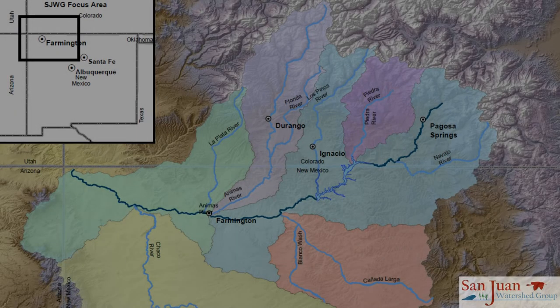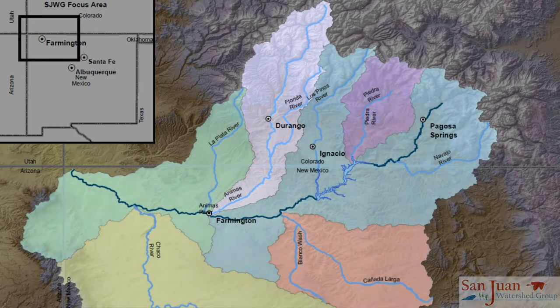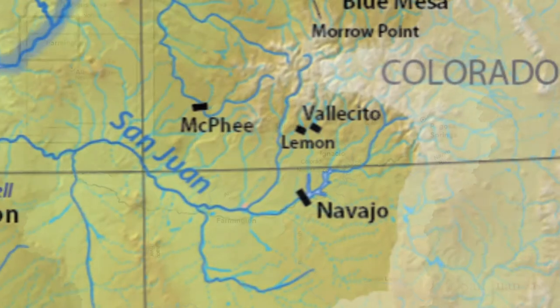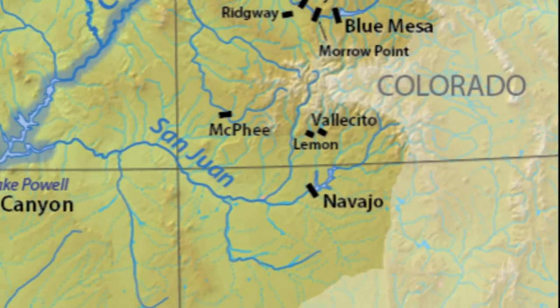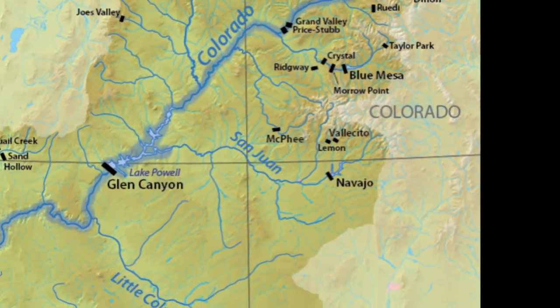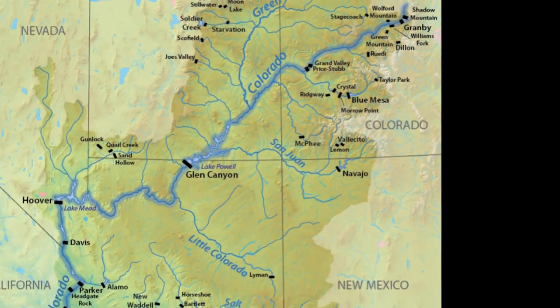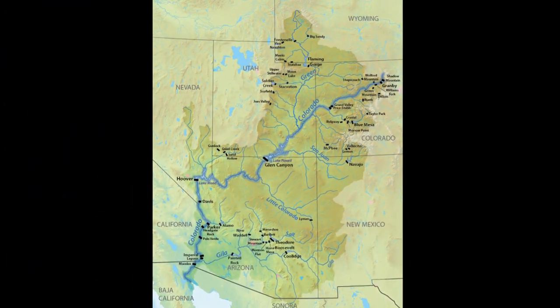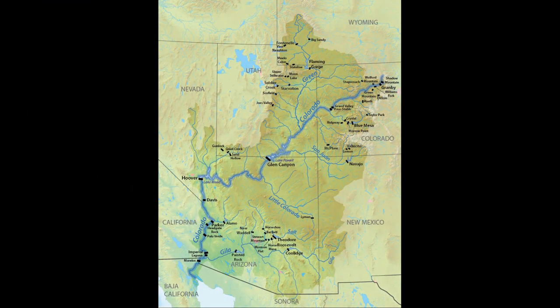Large watersheds are made up of smaller watersheds. For example, here in northwest New Mexico, the Animas River watershed is part of the bigger San Juan River watershed, and the San Juan River watershed is part of the Colorado River watershed that eventually flows into the Sea of Cortez in Mexico and out to the Pacific Ocean.